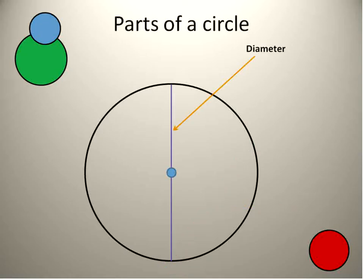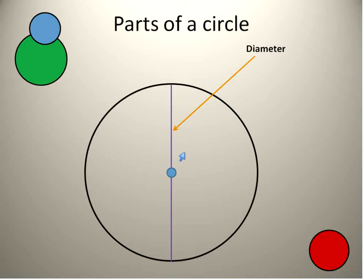Here's an example of the longest chord. The chord that goes straight through the center of the circle has a special name — we call that the diameter. The diameter of the circle is the longest distance that you can draw inside the circle. You can also draw a diameter in any different direction. Any point of the circle can go through the center and touch another point of the circle, so there's an infinite number of diameters that you can draw through a circle.